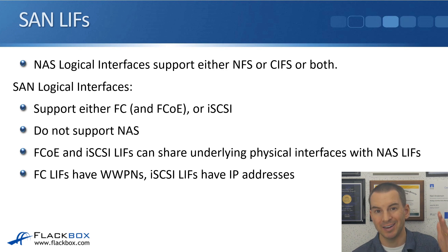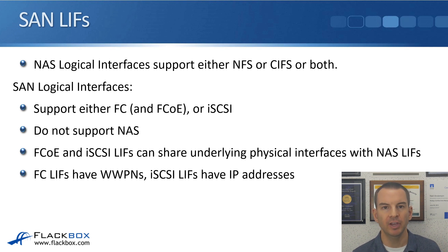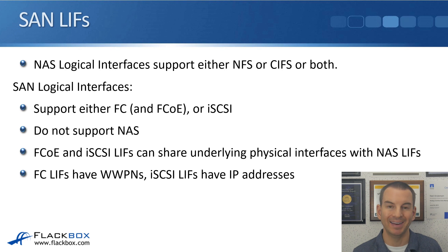FCoE and iSCSI LIFs can, however, share underlying physical interfaces with NAS LIFs. So you could have an iSCSI LIF with IP address 10.10.10.10 on physical port E0A, and also a NAS LIF for NFS with IP address 10.10.10.20 on the same underlying physical port. So at the physical port level they support both SAN and NAS, but at the LIF level it's one or the other.